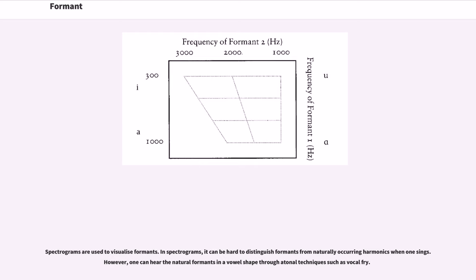Spectrograms are used to visualize formants. In spectrograms, it can be hard to distinguish formants from naturally occurring harmonics when one sings. However, one can hear the natural formants in a vowel shape through atonal techniques such as vocal fry.